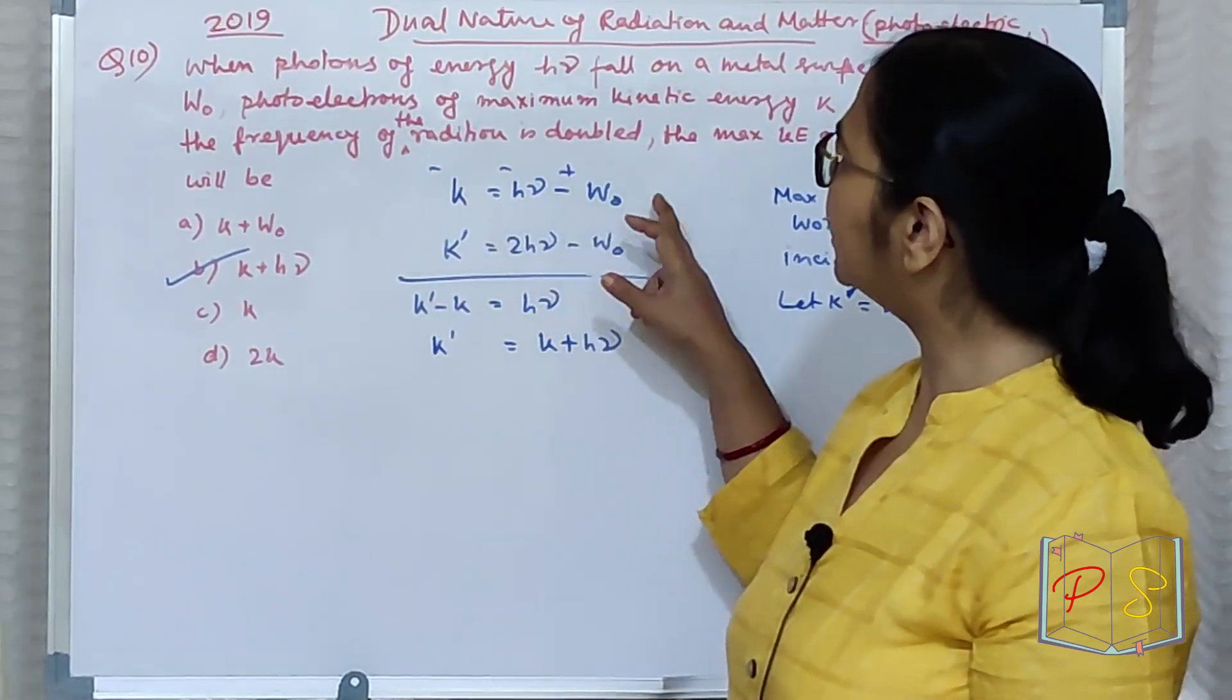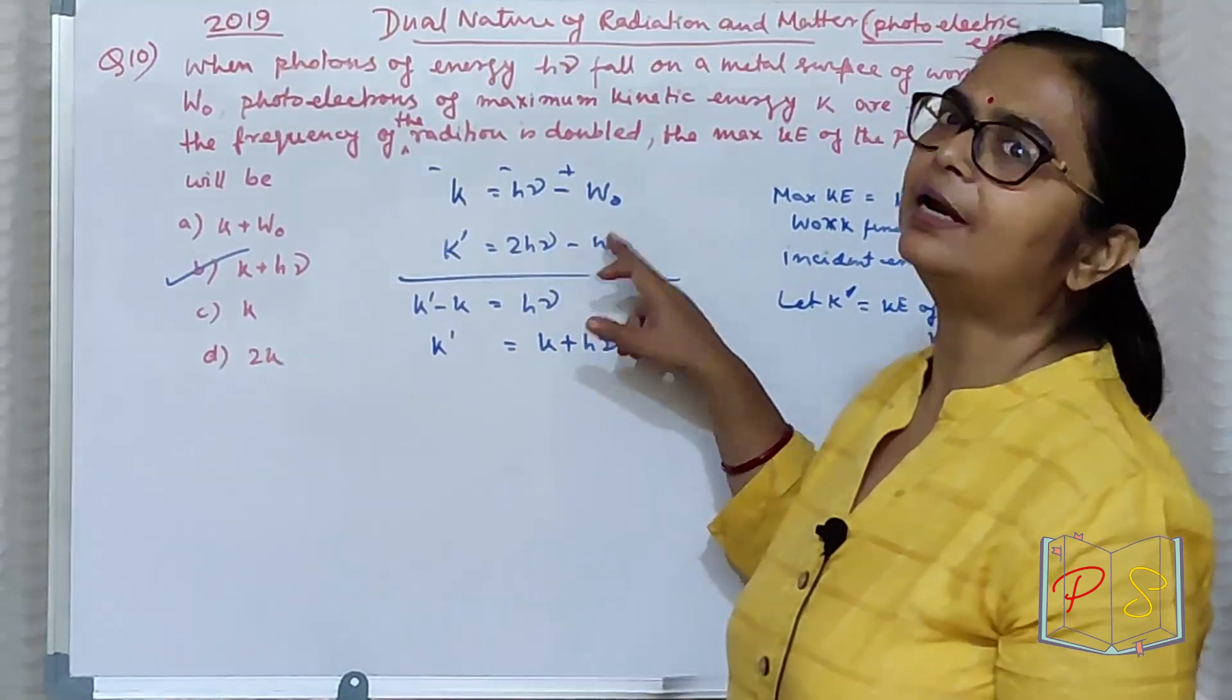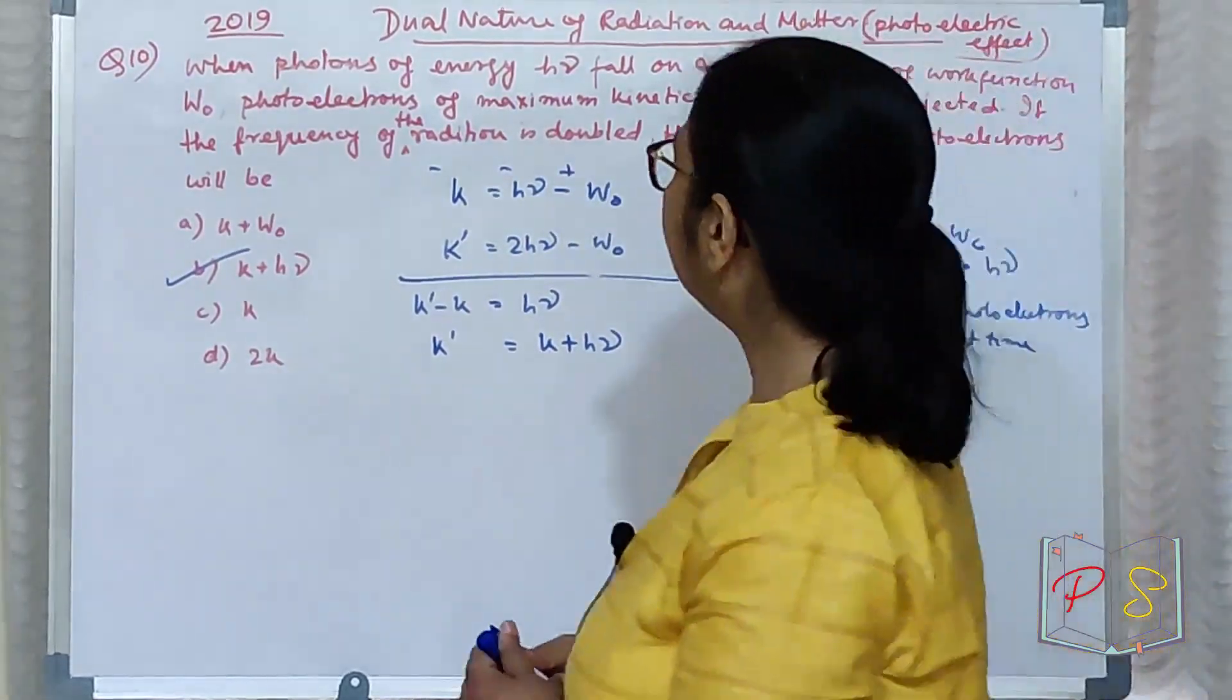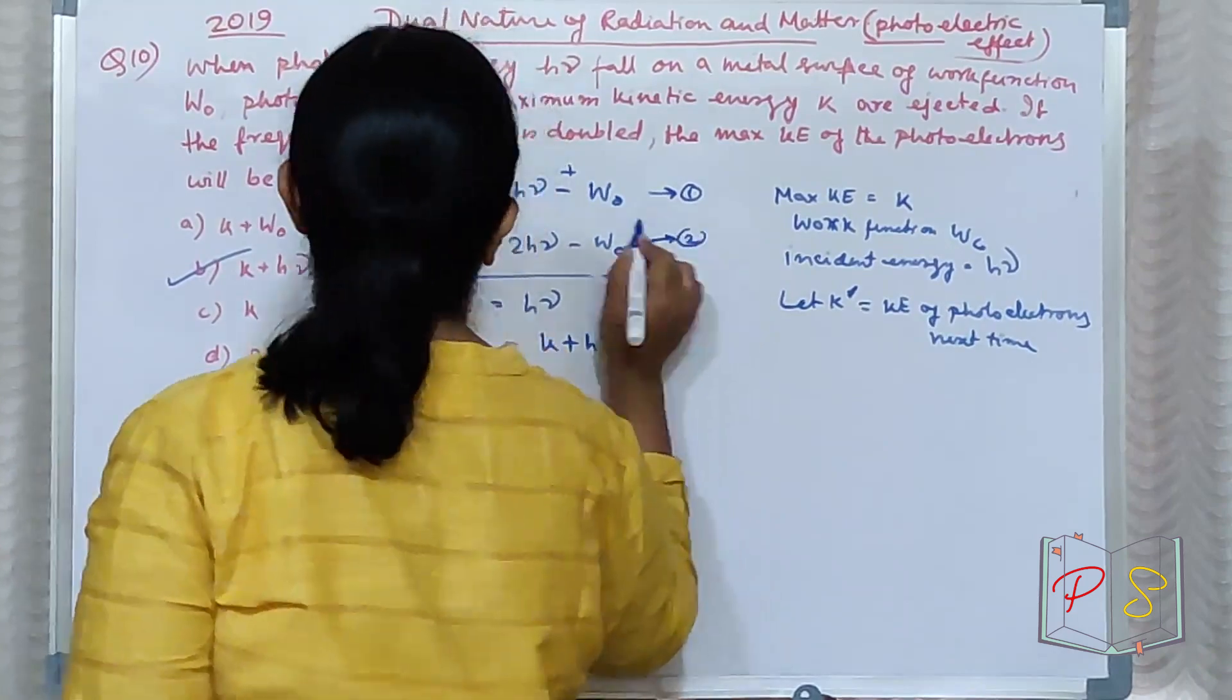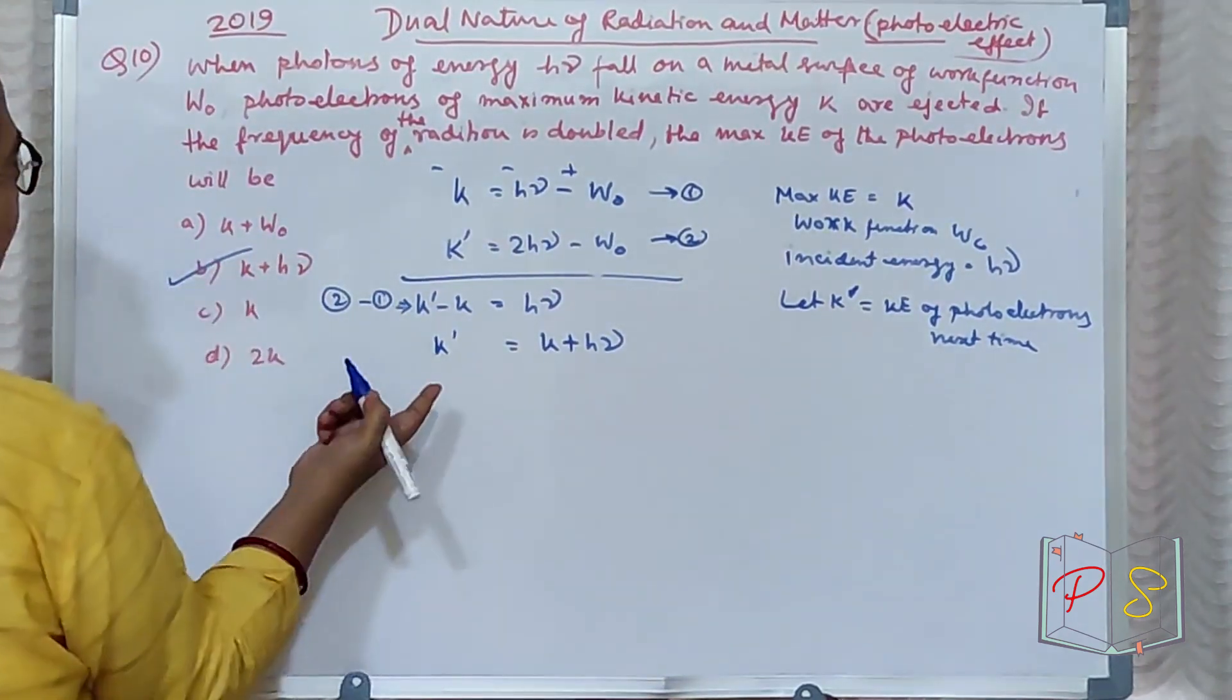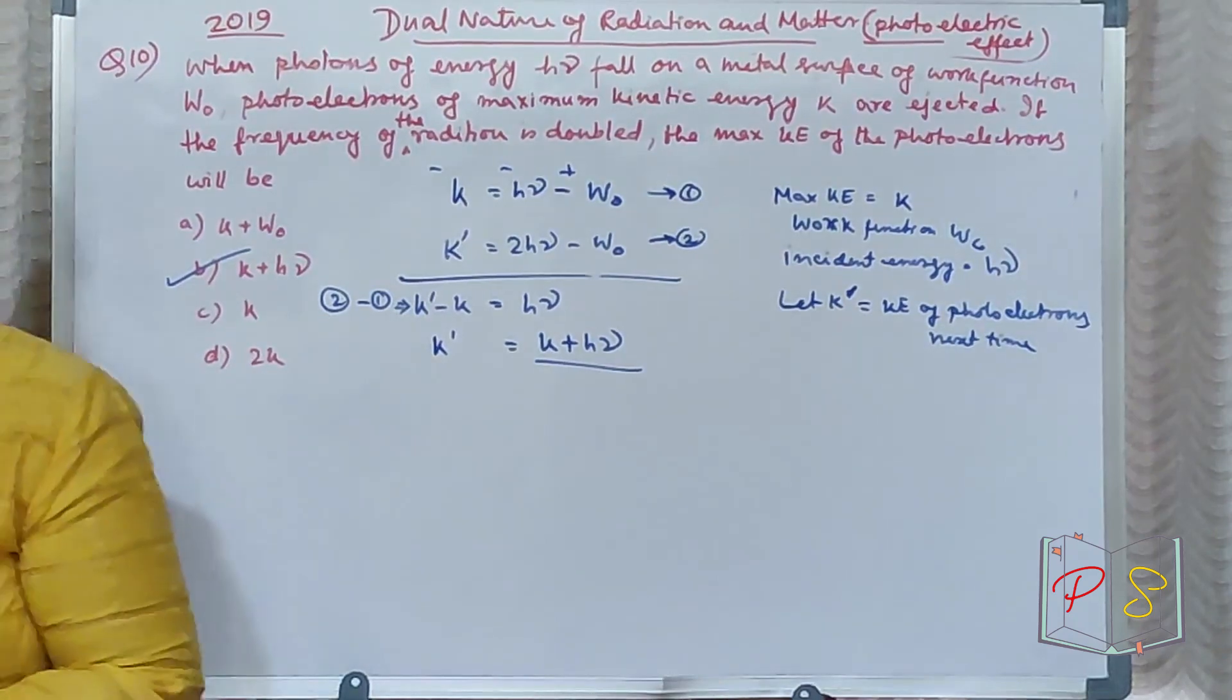K equal to hν minus W₀. K', next time, K' equal to 2hν minus W₀. This, this, subtract kar diya. Pacha to chal raha hai. This is 1, this is 2. Mane jo kiya, 2 minus 1 kiya. Jo aaya K' minus K equal to hν. So K', K' hi chahiye tha. K plus hν. B option is your correct option.